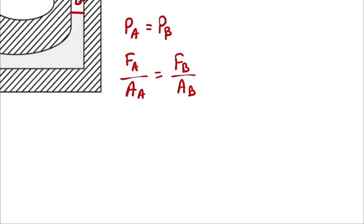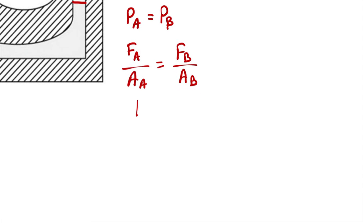These are presumably circular pistons, which means that their area can be written as pi over 4 times diameter squared.